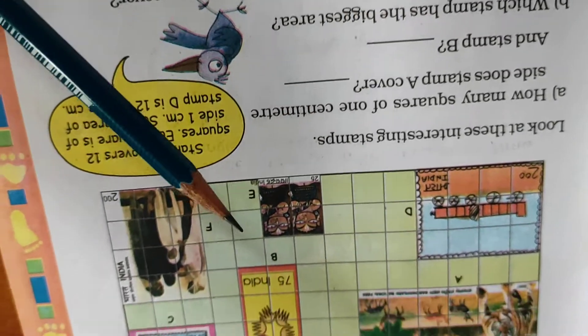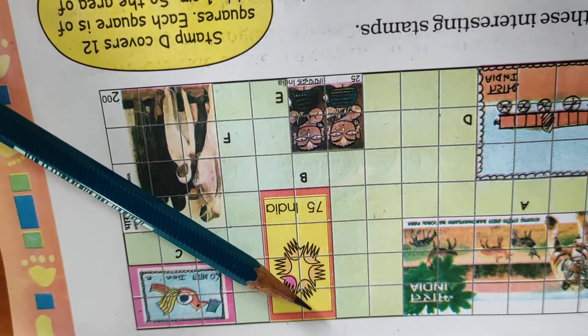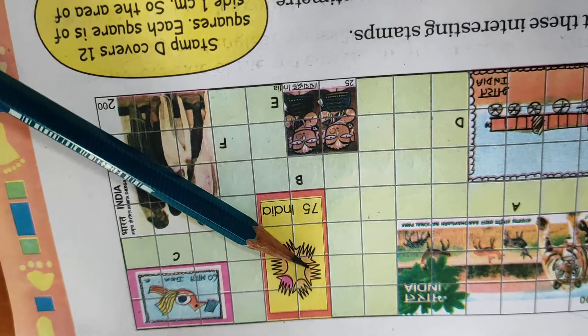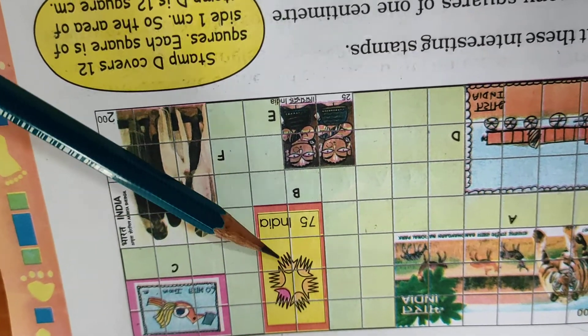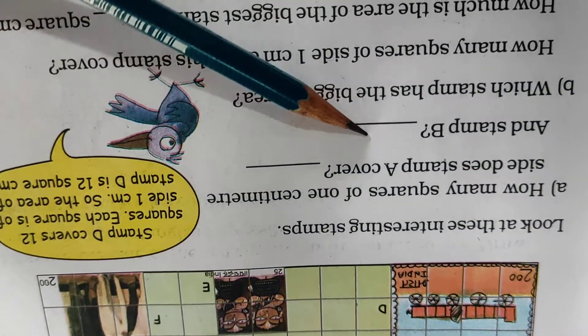Now second is stamp B. So stamp B is here. How many squares covered? 1, 2, 3, 4, 5, 6, 7, 8. 8 square cm.